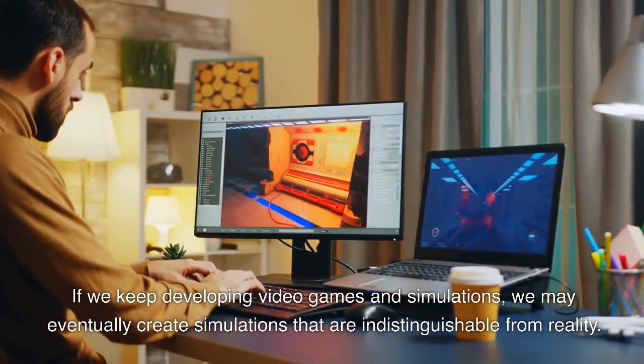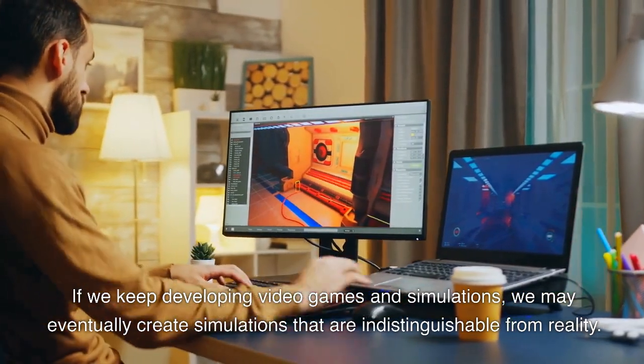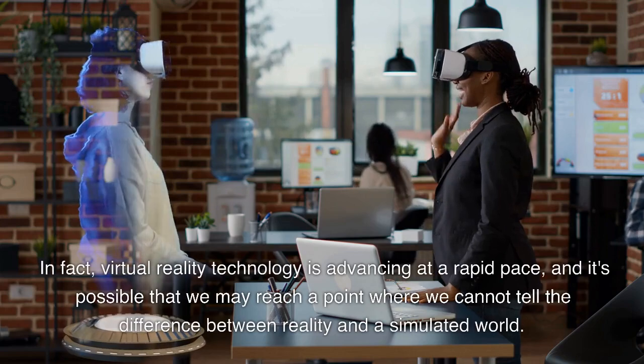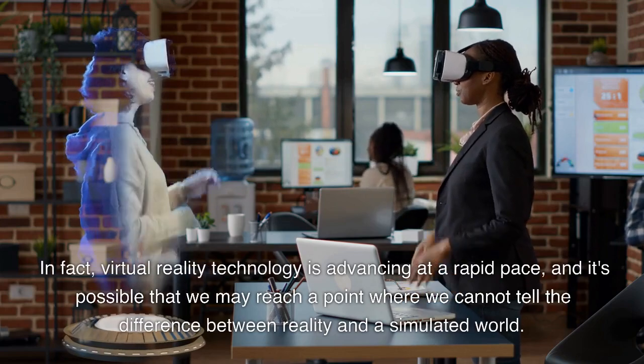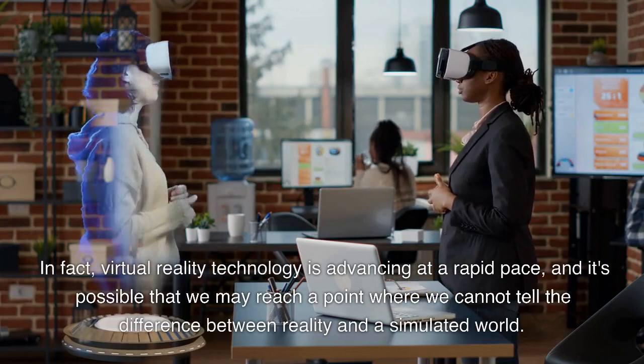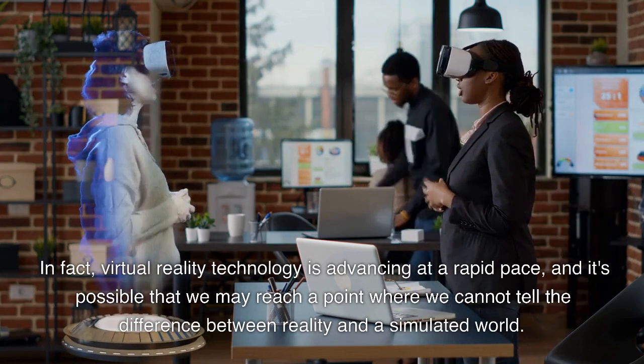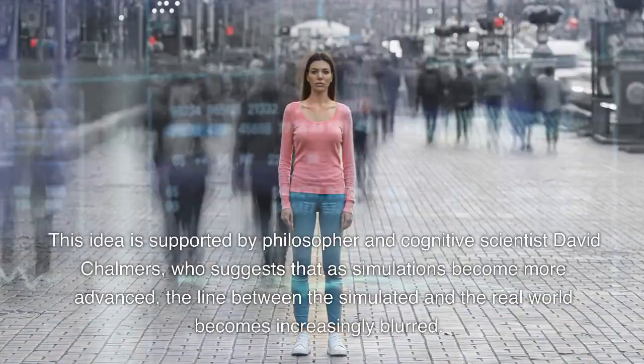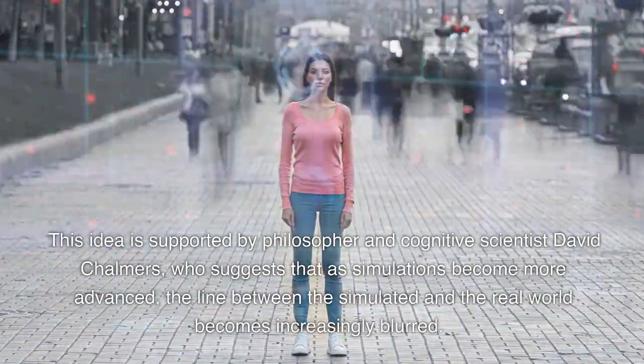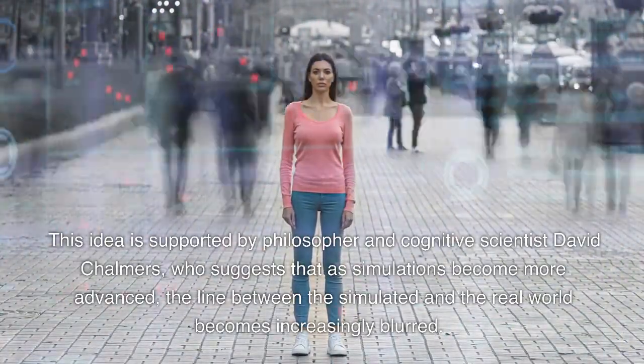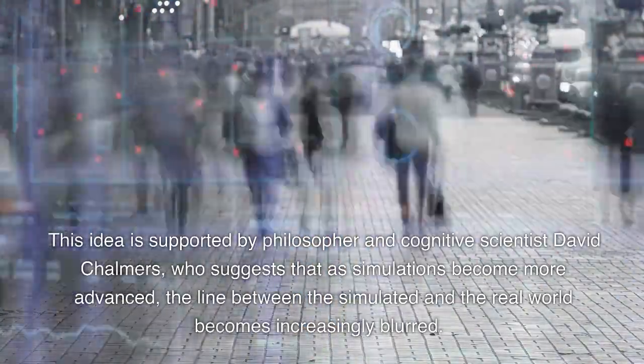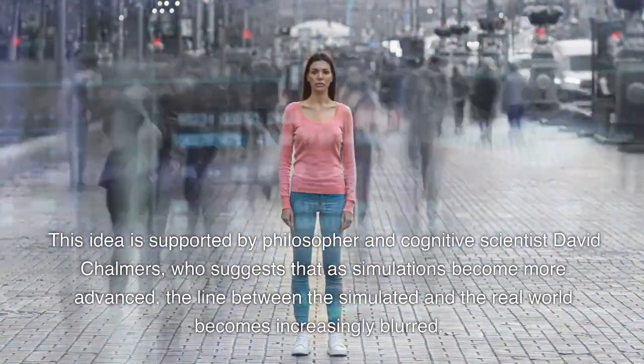In fact, virtual reality technology is advancing at a rapid pace, and it's possible that we may reach a point where we cannot tell the difference between reality and the simulated world. This idea is supported by philosopher and cognitive scientist David Chalmers, who suggests that as simulations become more advanced, the line between the simulated and the real world becomes increasingly blurred.